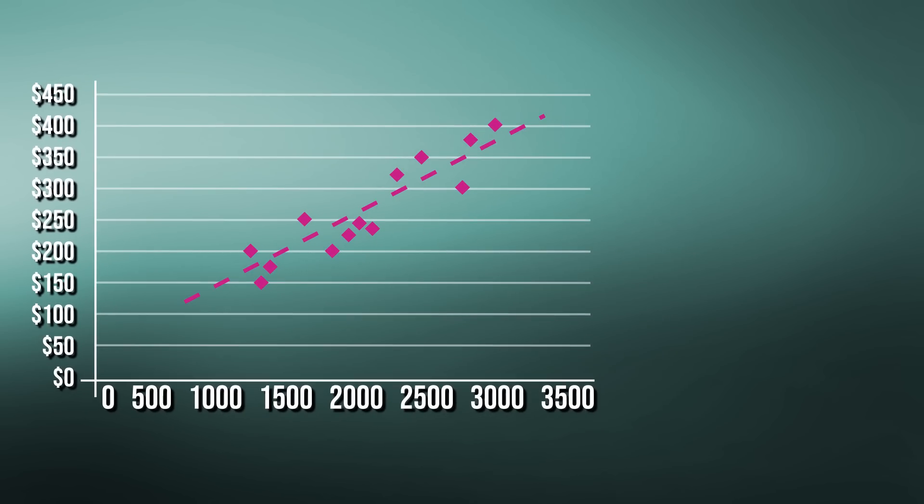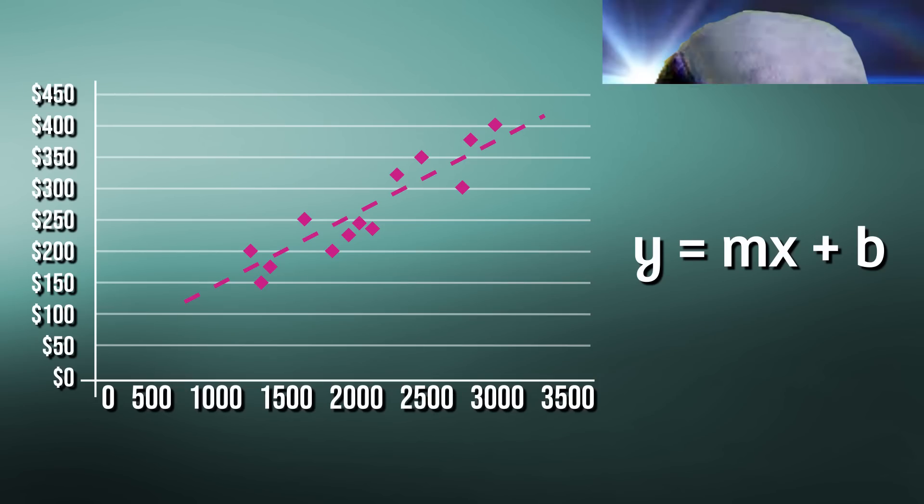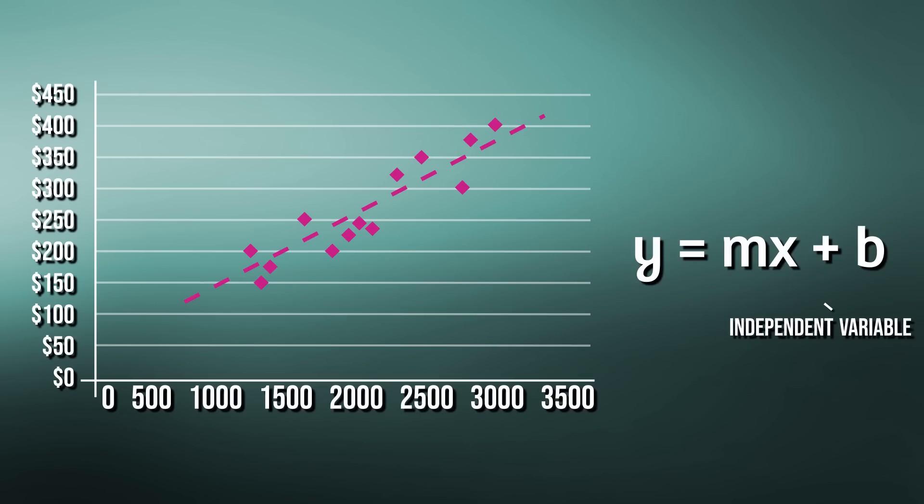Since we're trying to create a line, we'll use a statistical inference technique called linear regression. This allows us to summarize and study the relationship between two variables. One variable, x, is regarded as the independent variable. The other variable, y, is regarded as the dependent variable.